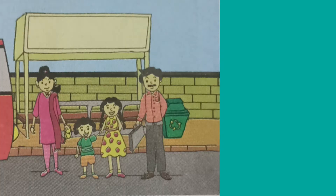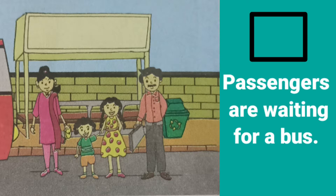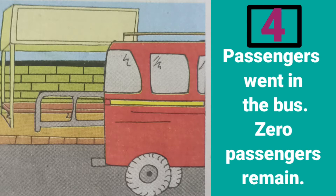Look at this picture carefully. In this picture, four passengers are waiting for a bus. When the bus came, four passengers went in the bus. No passengers remain waiting, so zero passengers remain. Zero means nothing.